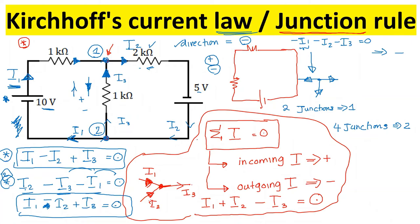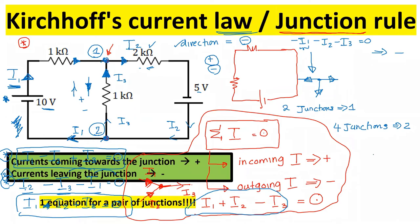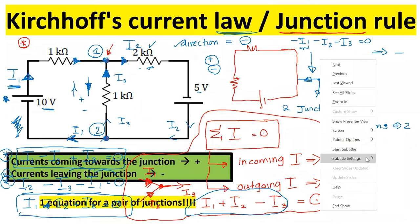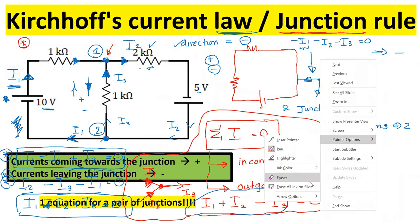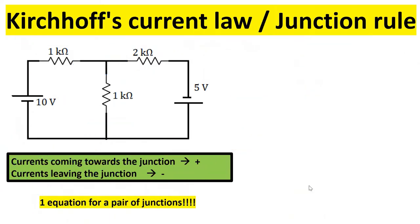If we have two junctions in a circuit, we write only one equation for the junctions. If we have four junctions, we write two equations — one per pair, because any two junctions will give identical equations. Summary of the junction rule: something coming into the junction is positive, something leaving the junction is negative, and one equation per pair of junctions.